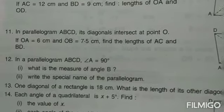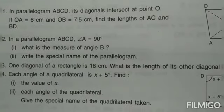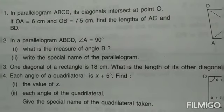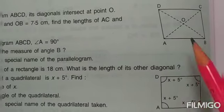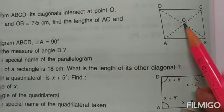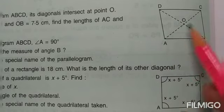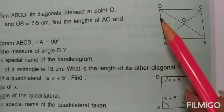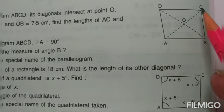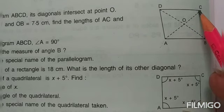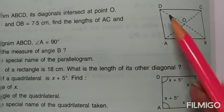The next question: in a parallelogram ABCD, the diagonals intersect at point O. OA and OB are given, and we need to calculate the length of the complete diagonals. OA multiplied by 2 gives the length of AC, and OB multiplied by 2 gives the length of BD.